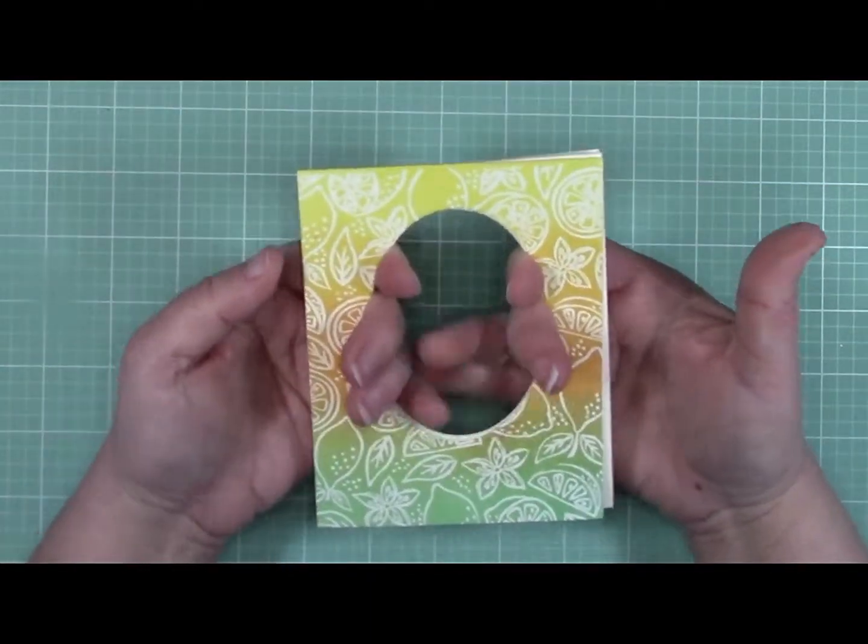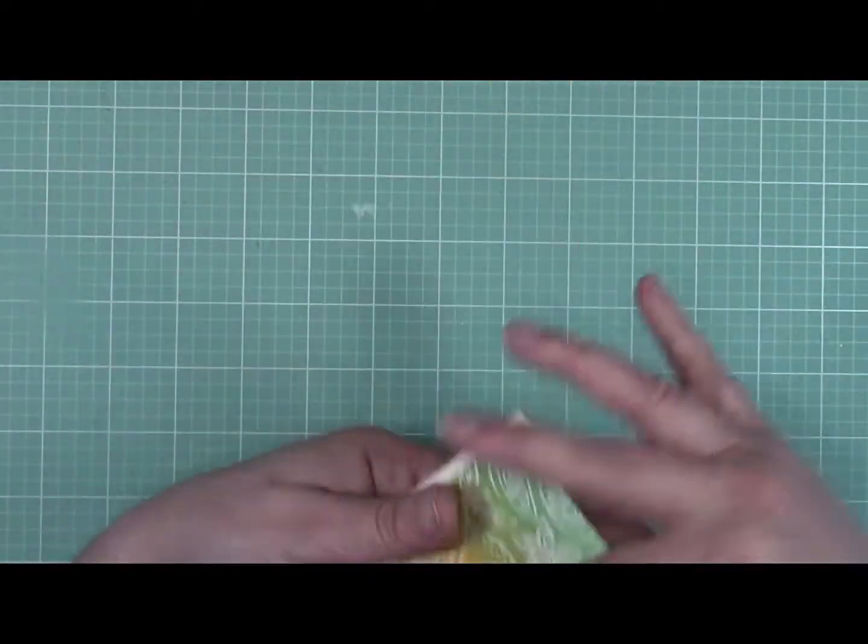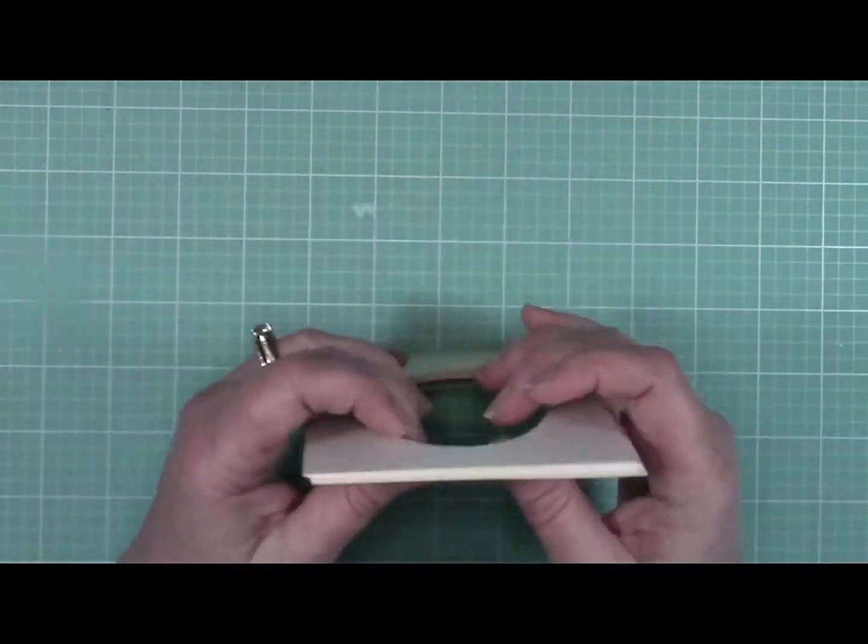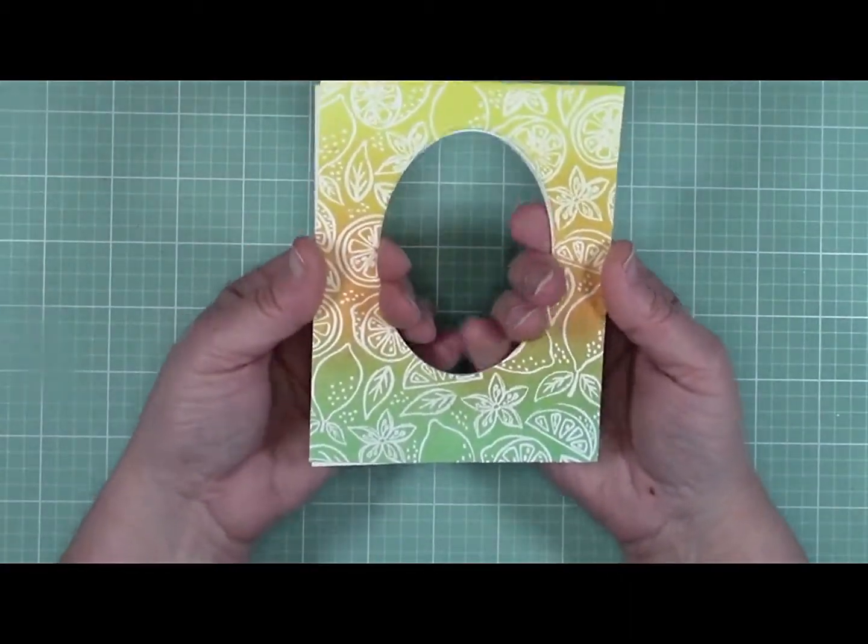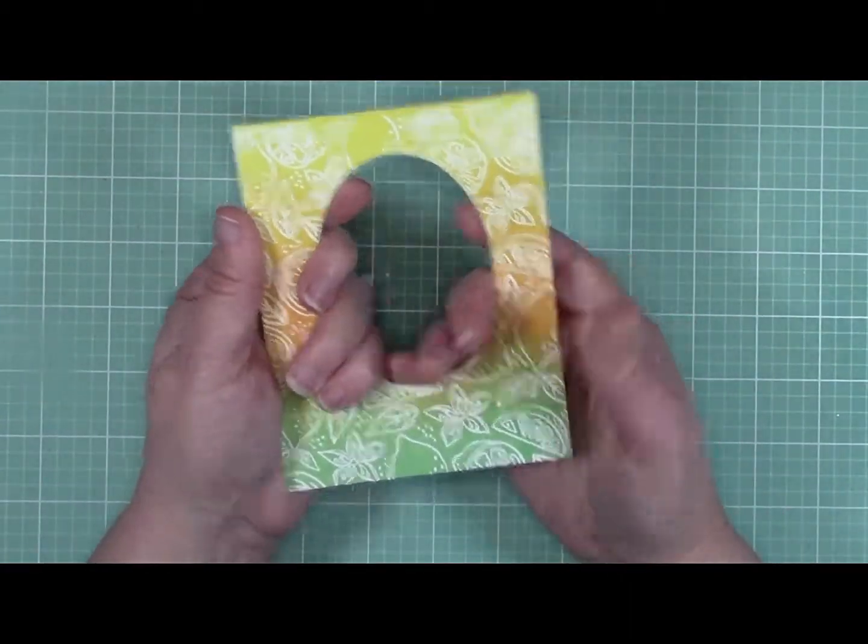And then you put your colored panel on the top, and you see I had it wrong because I've got weird overhangs there. So I just turned it around and kept playing with it till I got it right. And then once you have that ready, you can start gluing your panels together to create the window well you need for your shaker card.